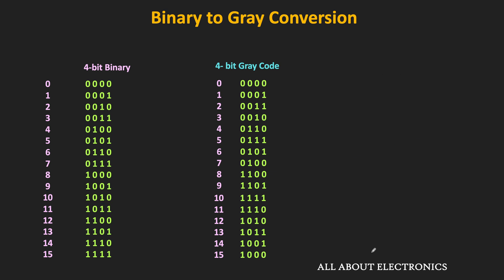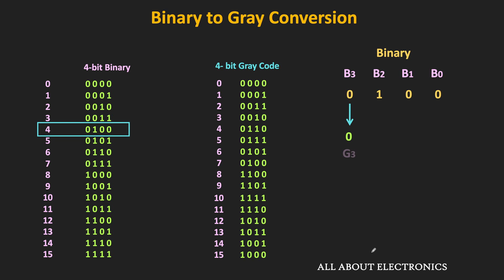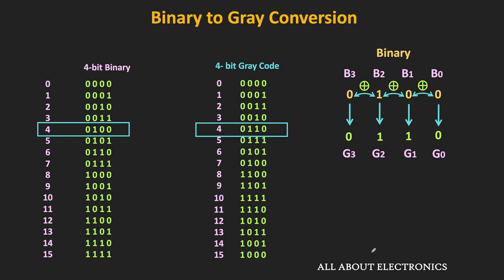Let's take another example: converting binary 0100 into gray code. The MSB g3 is copied as 0. Then g2 = b3 XOR b2 — since both bits are different, g2 = 1. Then g1 = b2 XOR b1 — since both bits are different, g1 = 1. Finally, g0 = b1 XOR b0 — since both bits b1 and b0 are equal, g0 = 0. Therefore, the equivalent gray code for binary 0100 is 0110.